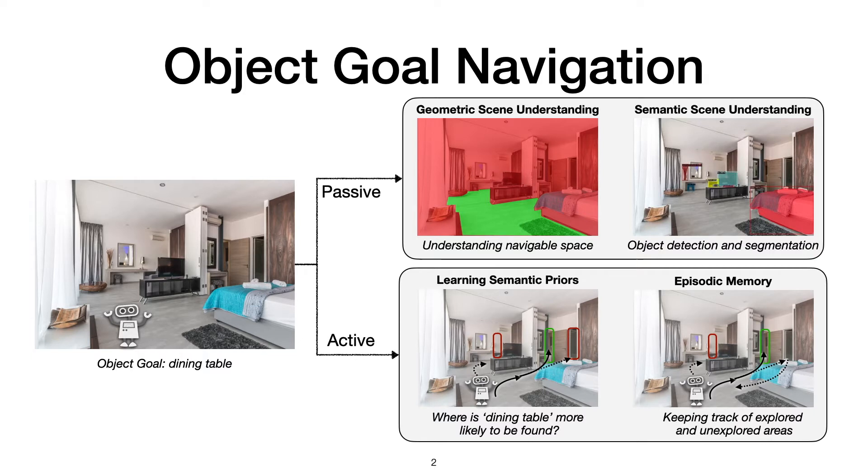When the goal object is not visible in the current field of view, the agent needs to decide which part of the environment should be explored first. By learning semantic priors or understanding which objects are more likely to be found in what parts of the environment, the agent can explore more efficiently to find the given goal object. Episodic memory allows the agent to keep track of explored and unexplored areas while looking for the goal object.